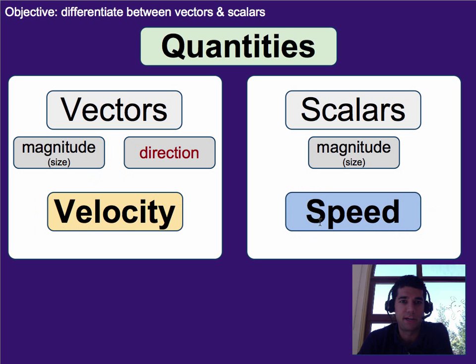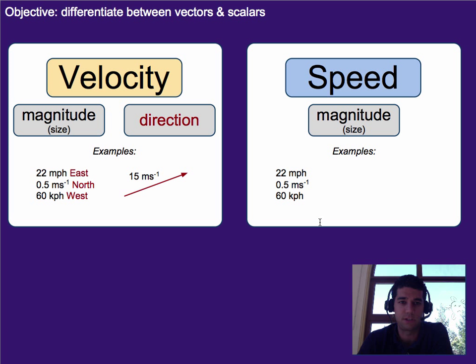The reason I remind you of that is because velocity is a vector and speed is a scalar. Both of them describe how fast things are going, but they do so slightly differently.